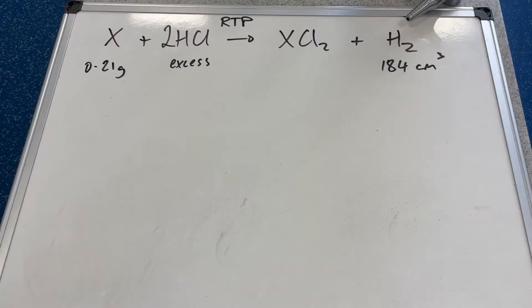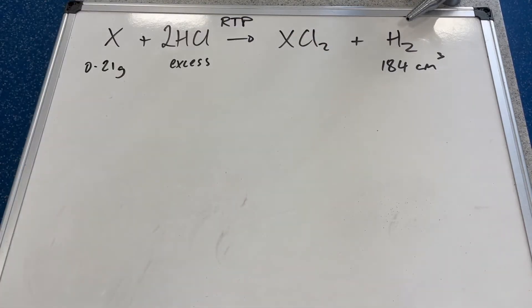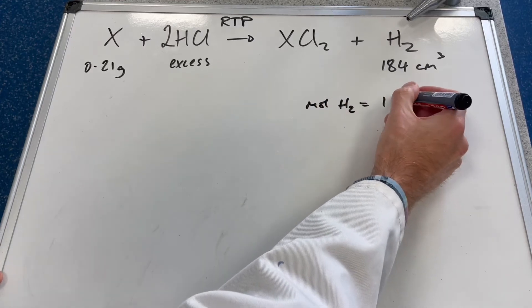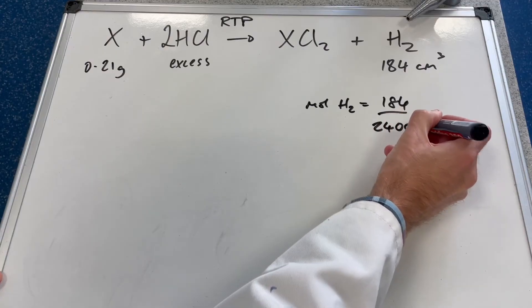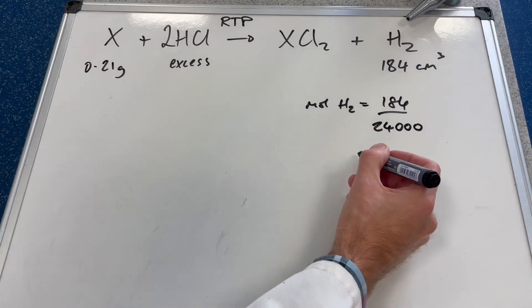The first thing we're going to do is calculate the moles of hydrogen that's come off the reaction. That's going to be moles of hydrogen: 184 divided by 24,000 because we're working in cm³. That comes out at 7.67 × 10⁻³ moles.